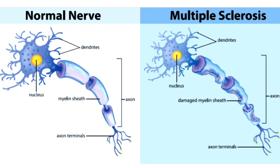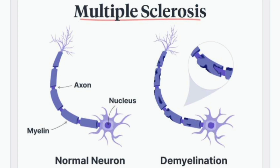Pathologically, it is a demyelinating disease. What is demyelinating? We have a myelin sheath protecting the neural tissue or the neurons — for each and every nerve cell, there is a protecting layer known as the myelin sheath. In this disease, there is a loss of or damage to the myelin sheath. That is why it is called a demyelinating disease.